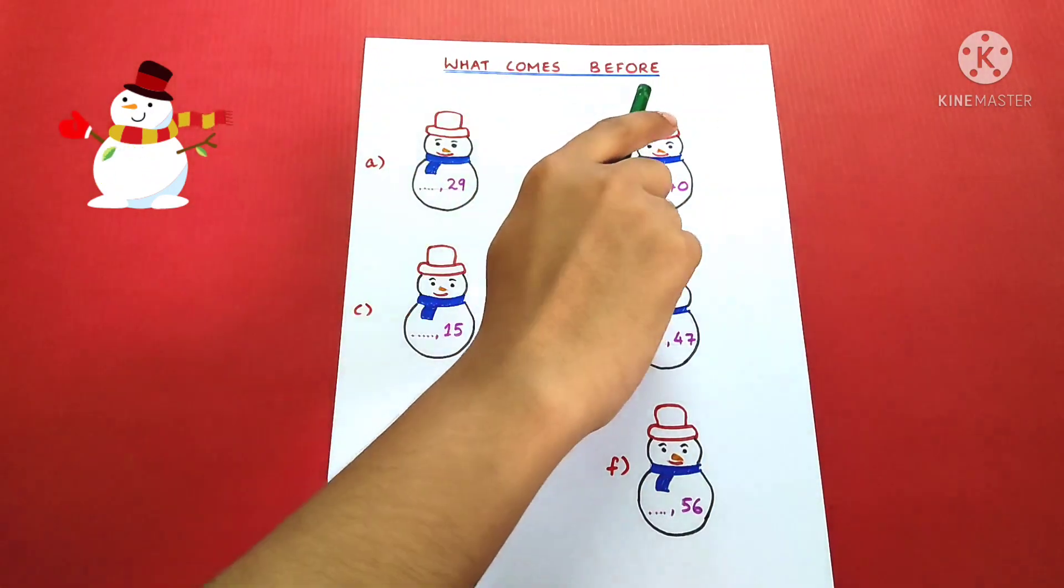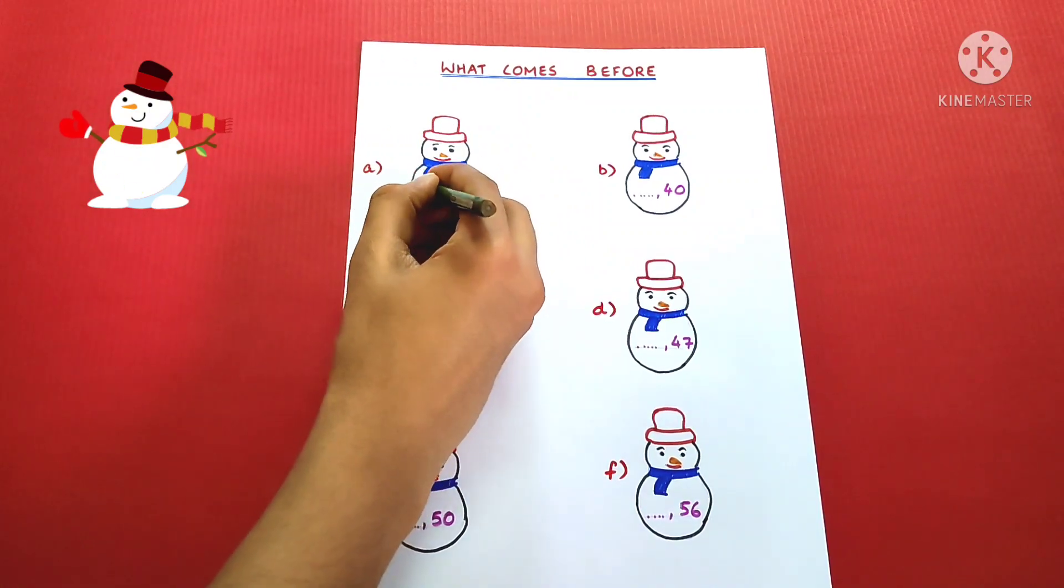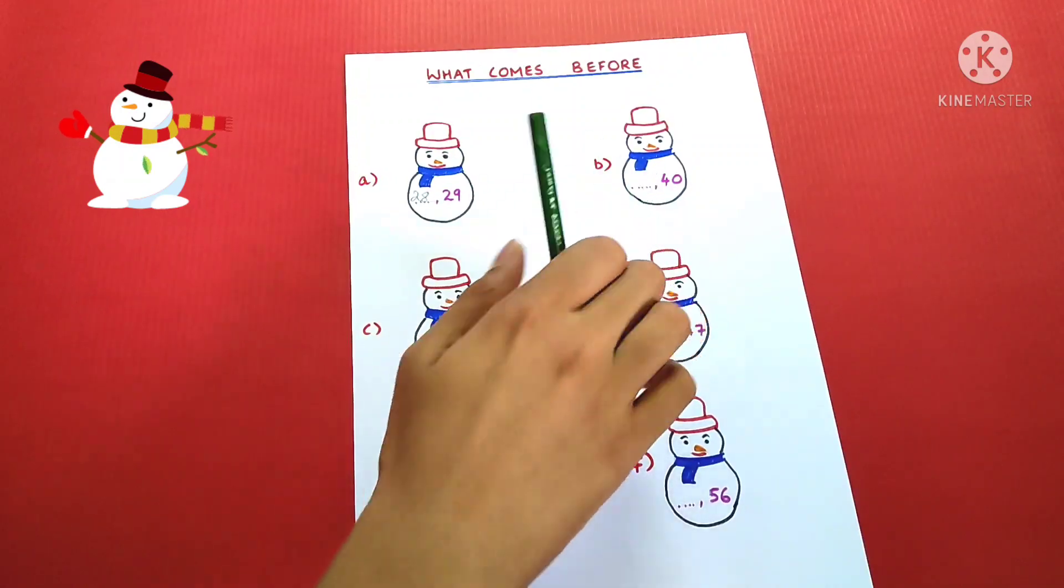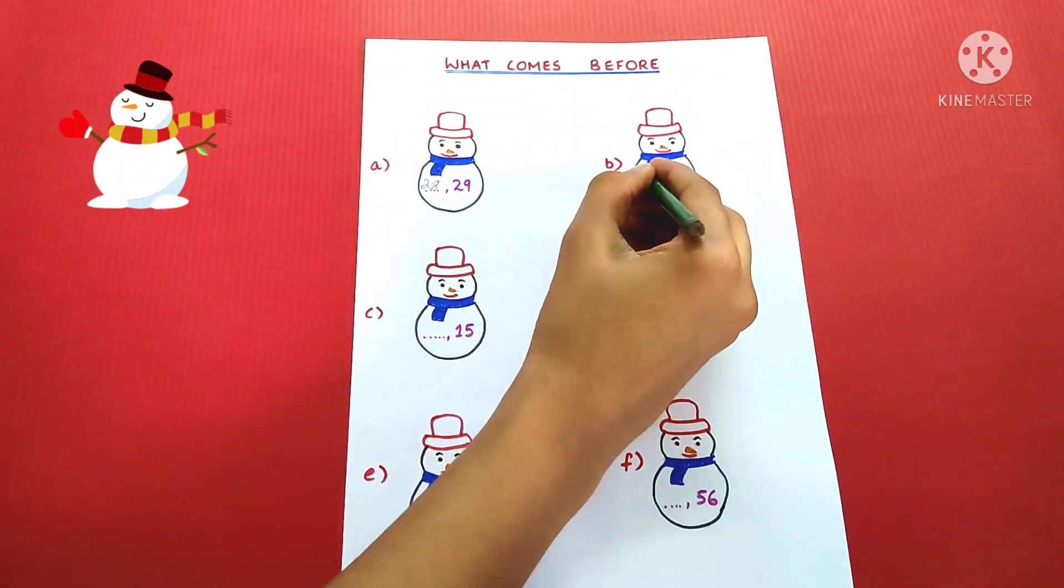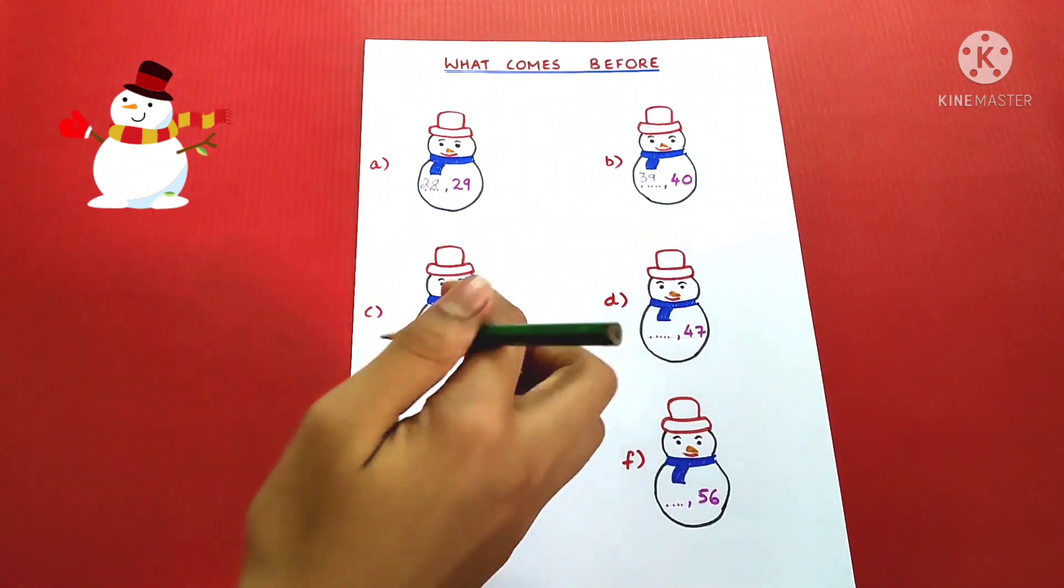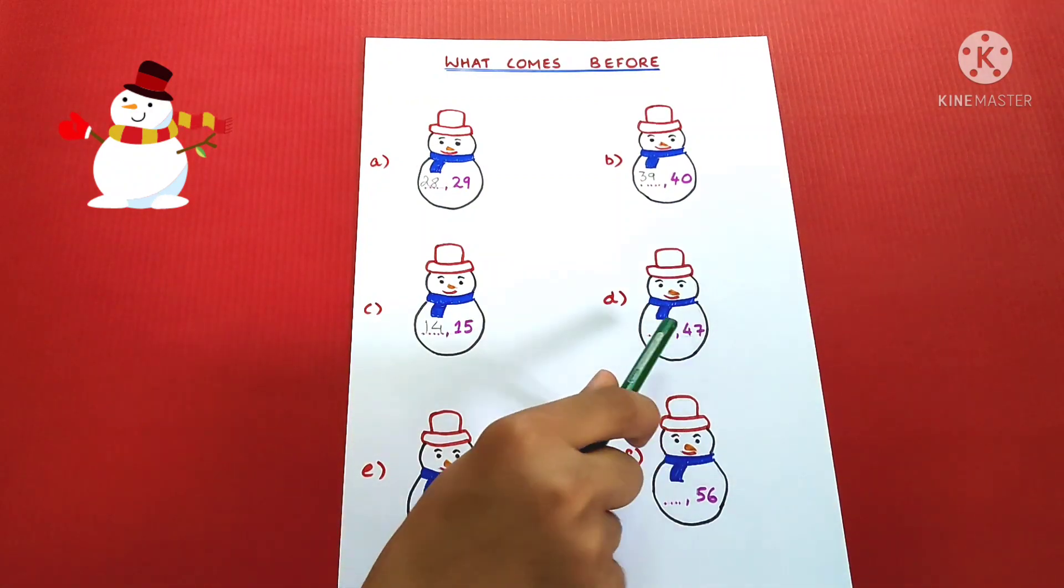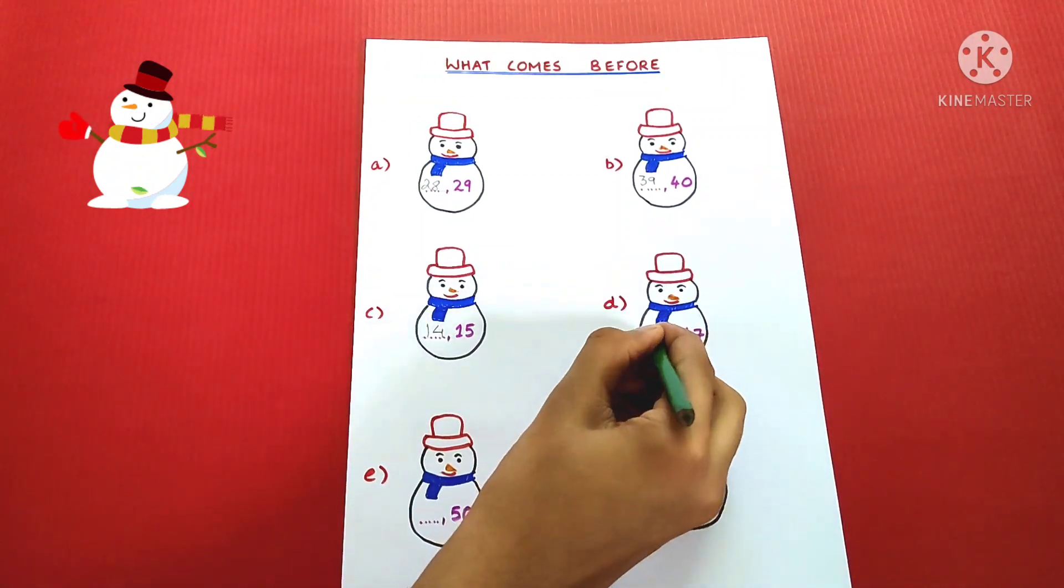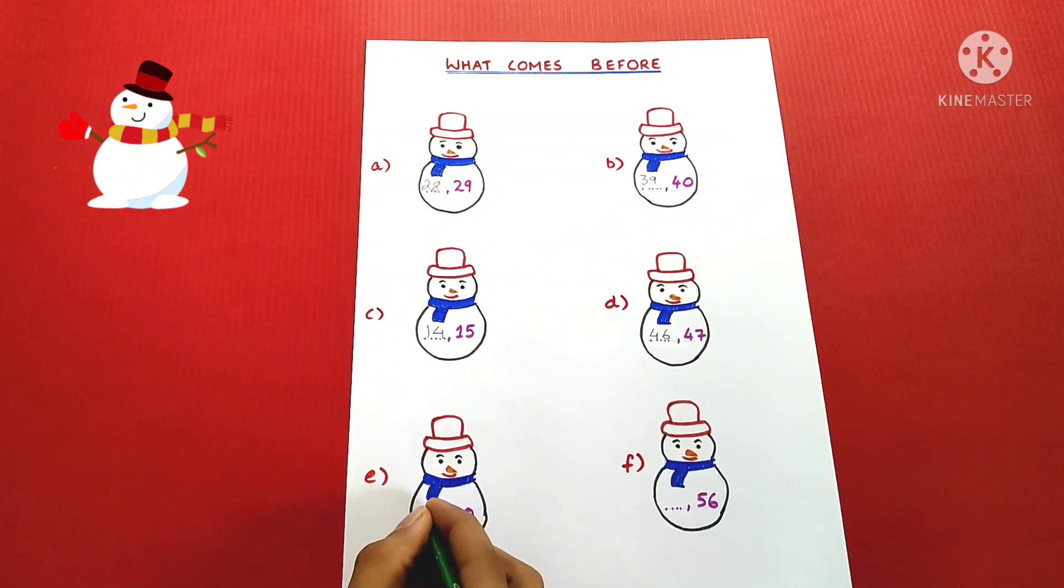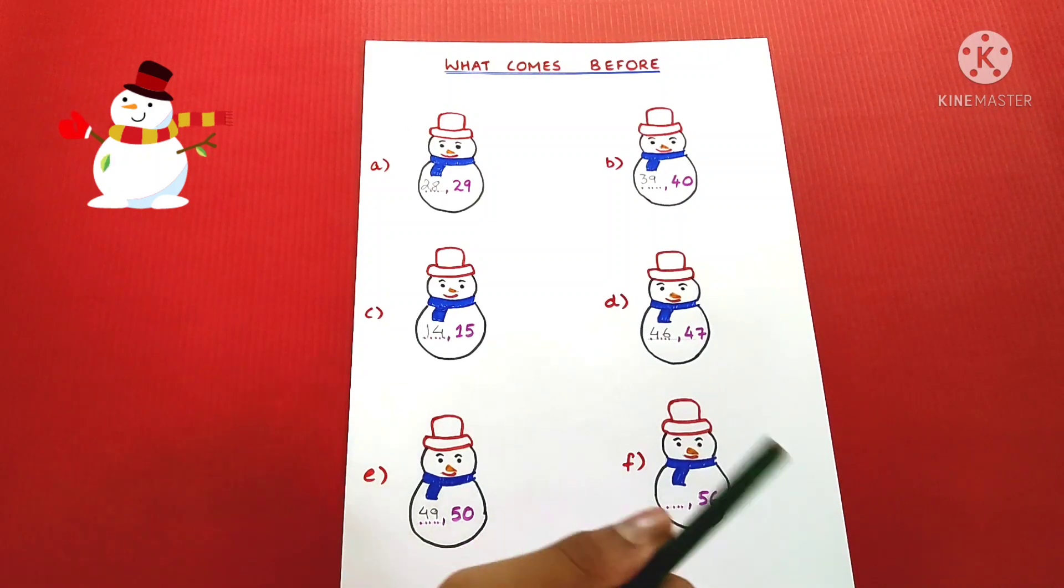What comes before 29? 28. 40? 39. 15? 14. 47? 46. 50? 49. 56? 55.